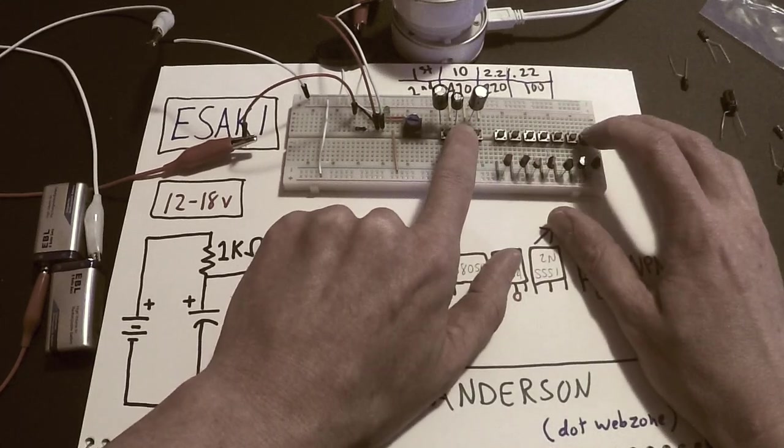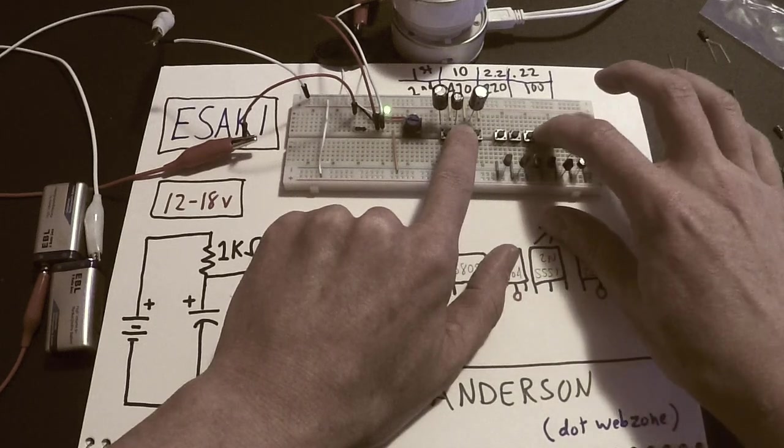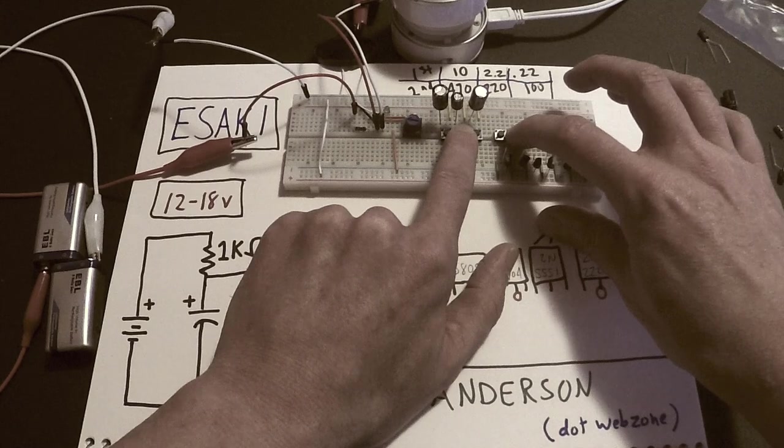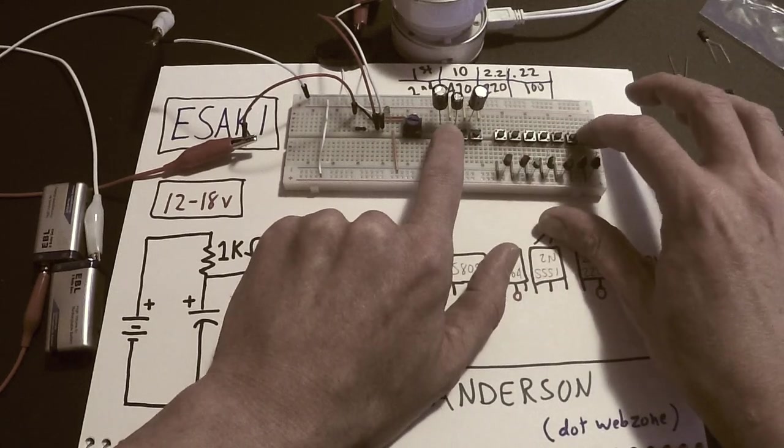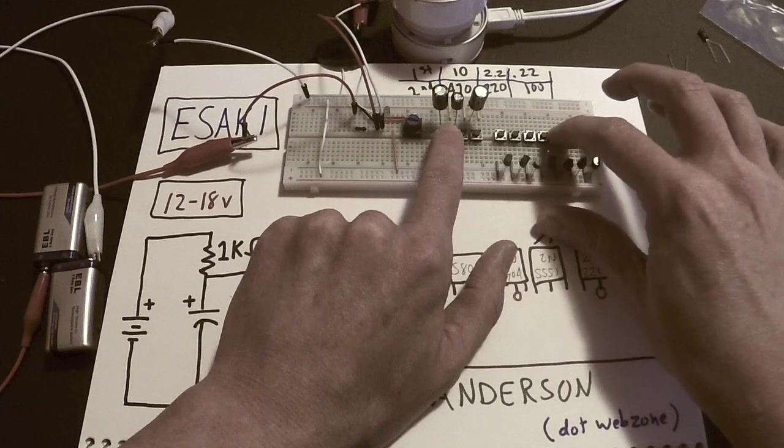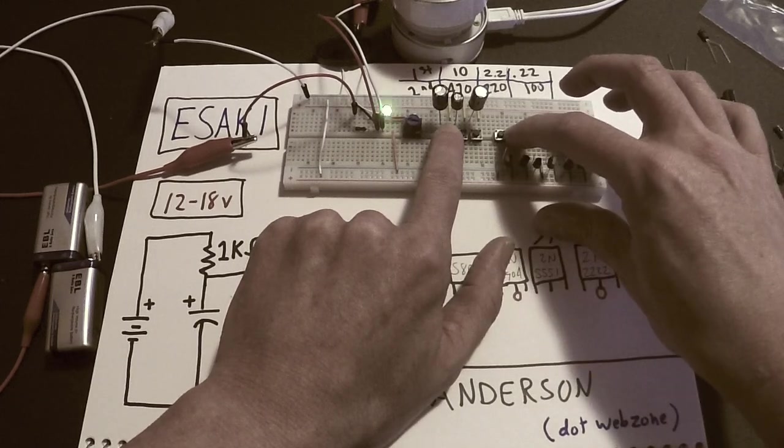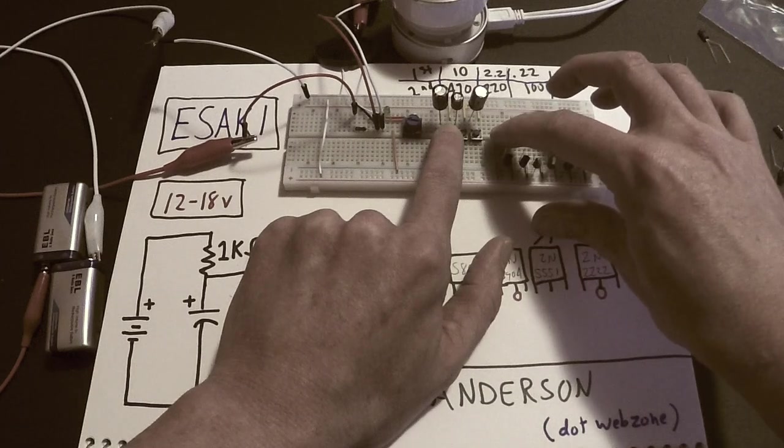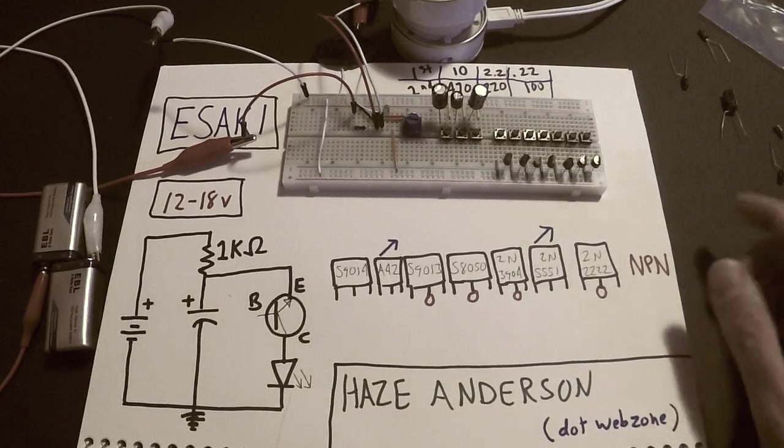Pretty cool huh? Here's the 220. And the 470. Pretty cool huh? Let's go really really really slow oscillations.